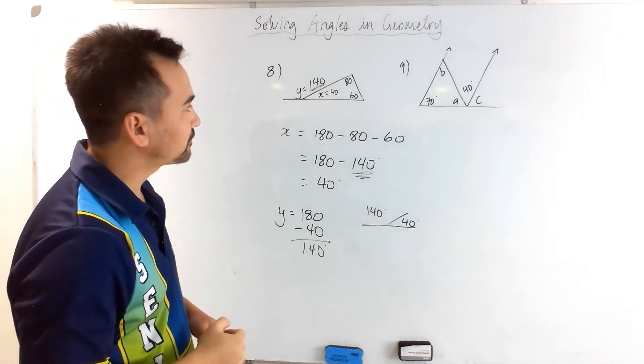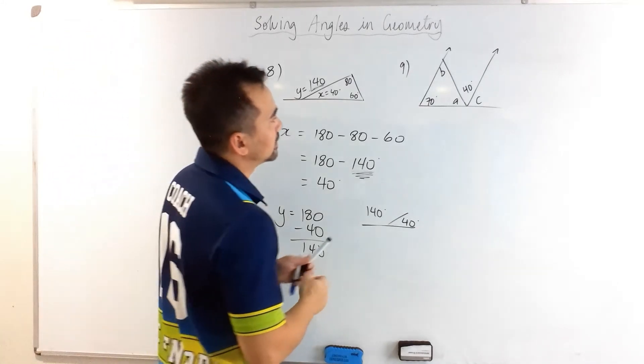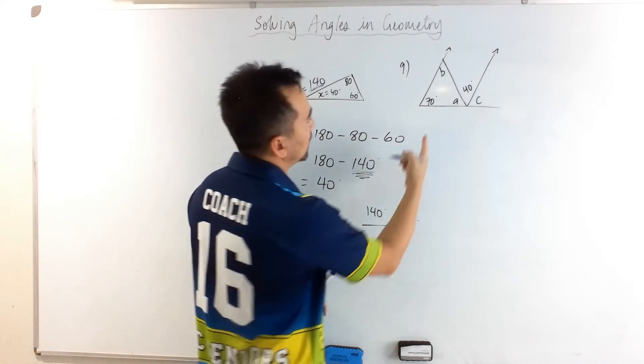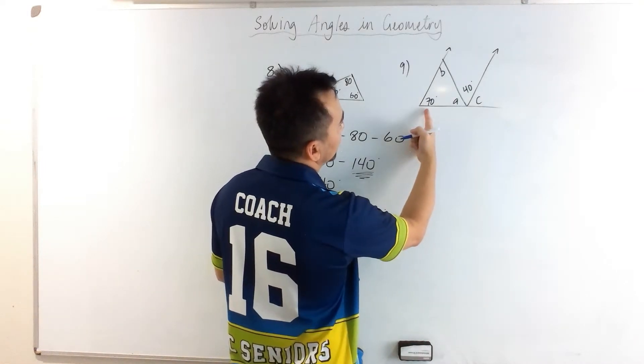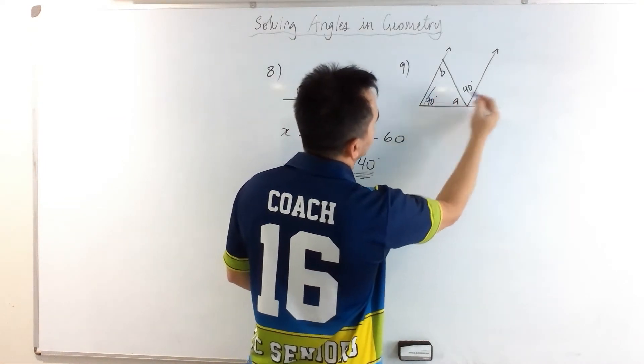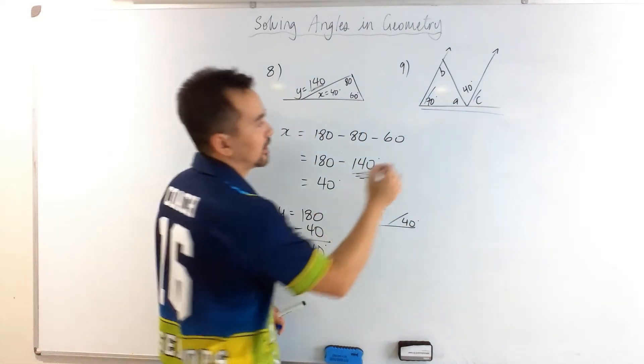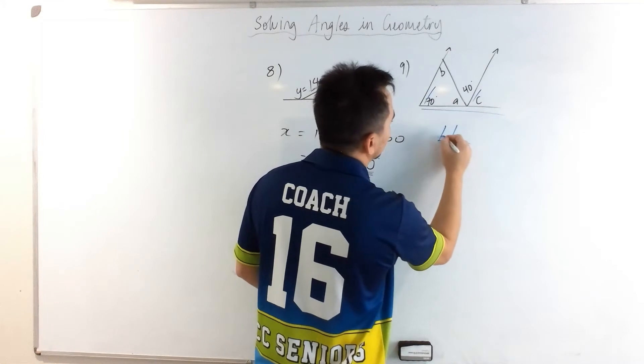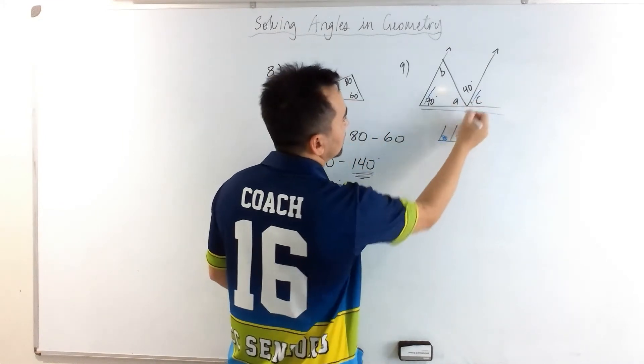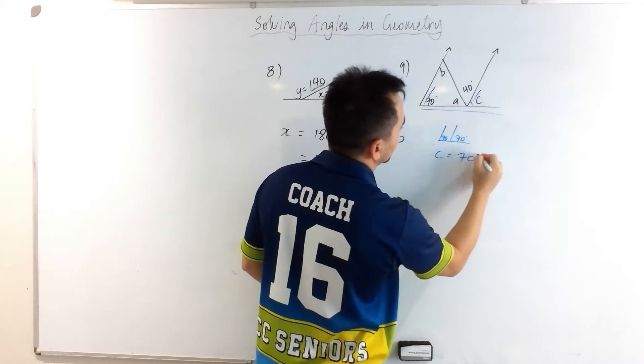Let's have a go at question 9. Right, so we have 70 degrees here, and I can see the f-rule straight off the bat. And that means that using the f-rule, c must be 70 degrees.